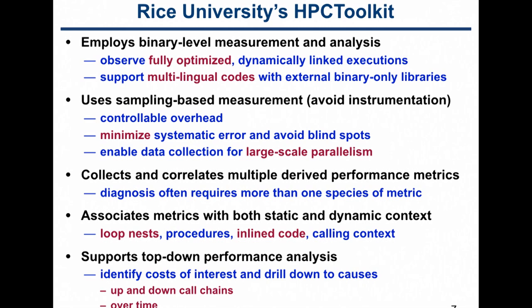HPCToolkit employs binary-level measurement and analysis. We observe fully optimized binaries — dynamically or statically linked — supporting multilingual codes with libraries potentially available only in binary form. HPCToolkit uses sampling-based measurement, so overhead is controllable: you set the sampling frequency to determine how often our tool makes measurements. Sampling minimizes blind spots: if you only instrument function entry and exit in user code and link against libraries, you miss library performance. Our tool just says: link your application normally, we'll measure wherever it runs, whether in libraries or directly in your application.